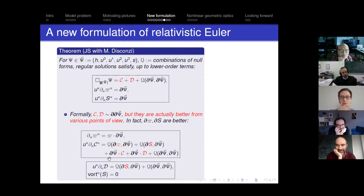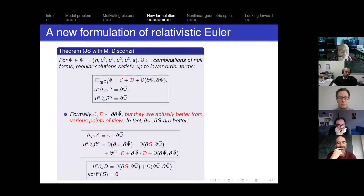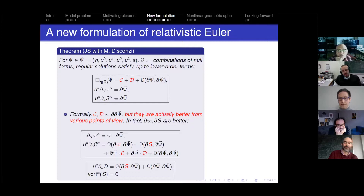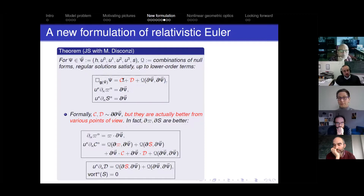If you count derivatives and control the divergence of omega and the curl of omega, through Hodge estimates you should be able to control one derivative of omega — and indeed that's what one can show. You can control one derivative of omega, which means you can control variable C, and that means from the point of view of regularity you're allowed to put it on the right-hand side of the equations. It doesn't mean you should always put it on the right-hand side for all applications, but for example in the study of the formation of shocks, it's a good idea to put this on the right-hand side.